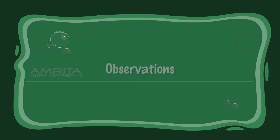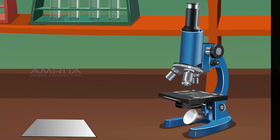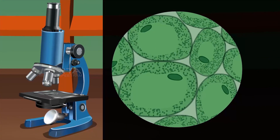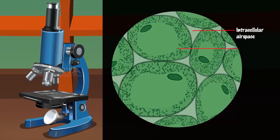Observations: All cells are isodiametric in shape, which means the cells have the same length and width. The cells in the tissue are loosely packed with large intercellular spaces between each cell. The cells contain cytoplasm and a nucleus and are surrounded by a cell wall. Each cell has a vacuole in the center.